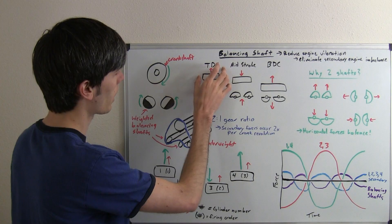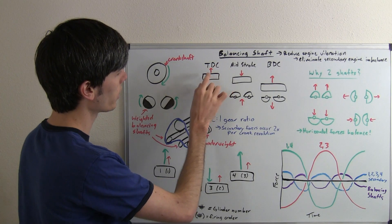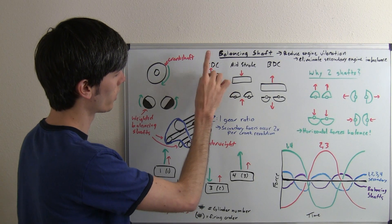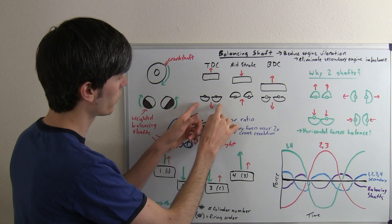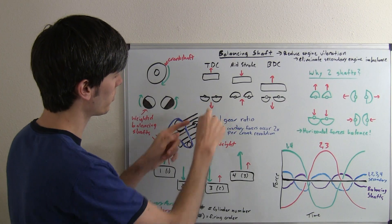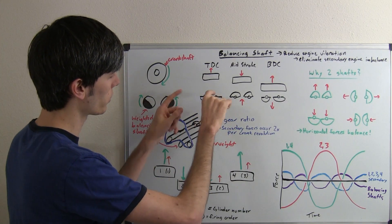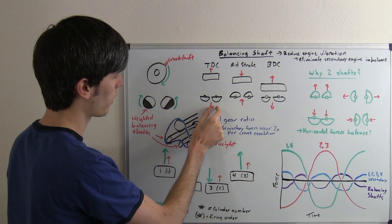When you're at top dead center, the secondary force on the piston is going to be up, so the secondary force of the counterbalance needs to be down. You're going to have these balancing shafts rotated downward at that moment in time.